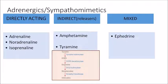Adrenergic or sympathomimetic drugs are classified into three groups: directly acting — adrenaline, noradrenaline, and isoprenaline, which bind directly to receptors; indirectly acting — amphetamine and tyramine, which increase the release of directly acting agents without binding to receptors; and mixed — ephedrine, which both binds to receptors and increases noradrenaline release. Noradrenaline is synthesized from the amino acid tyrosine through dopa, dopamine, and then noradrenaline, from which adrenaline is formed.